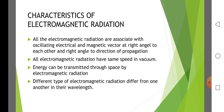Characteristics of electromagnetic radiation: All electromagnetic radiations are associated with oscillating electrical and magnetic vectors at right angles to each other and at right angles to the direction of propagation. All electromagnetic radiations have the same speed in vacuum — they travel with the speed of light. Energy can be transmitted through space by electromagnetic radiation. Different types of electromagnetic radiation differ from one another in their wavelength.